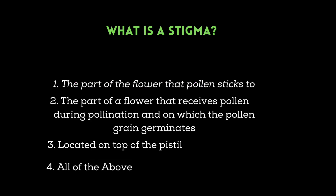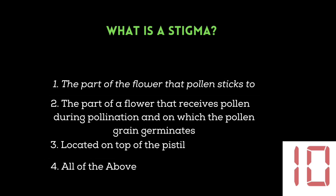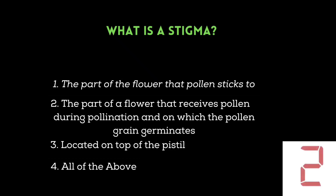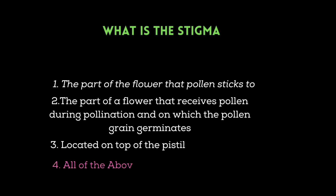The next question is: what is a stigma? The part of a flower that pollen sticks to. The part of a flower that receives pollen during pollination and on which the pollen grain germinates. Located on top of the pistil. All of the above. Your time starts now. The correct answer for this question is number four: all of the above.